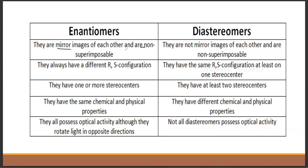Mirror image, non-superimposable. Not mirror image, non-superimposable. Different RS configuration versus same RS configuration. At least one chiral center — they have one or more chiral centers. They have at least two chiral centers. They have the same physical and chemical properties versus different chemical and physical properties. They all possess optical activity, although they rotate light in opposite directions.